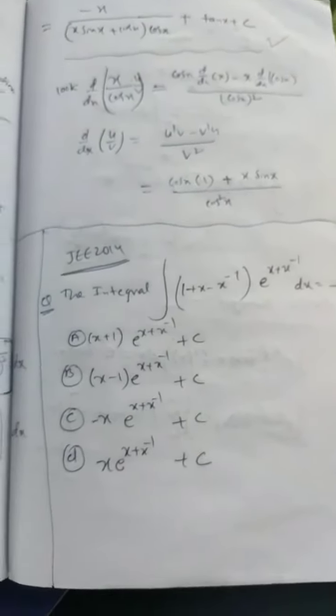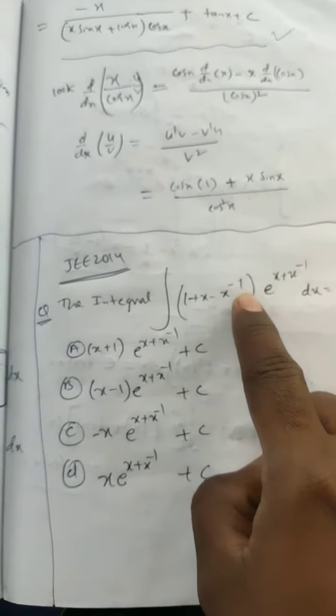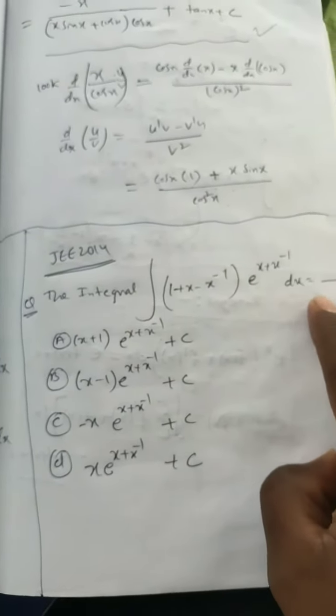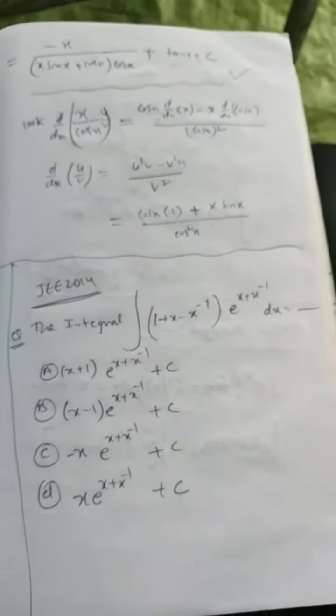Let us see this question: the integral of (1 + x - x^(-1))e^(x + x^(-1))dx equals dash. This is from the year 2014, so we are going to solve this 2014 question.